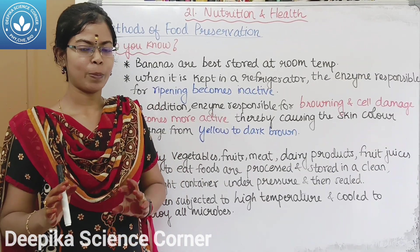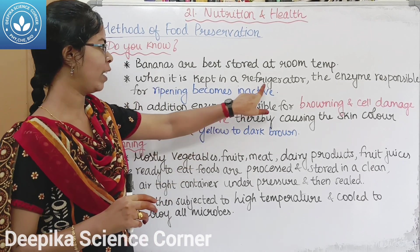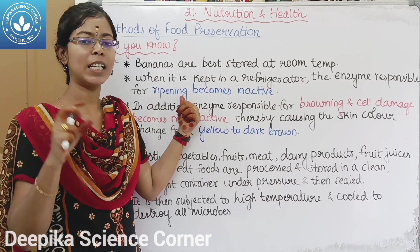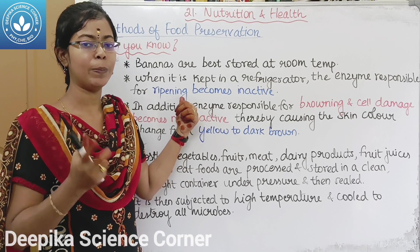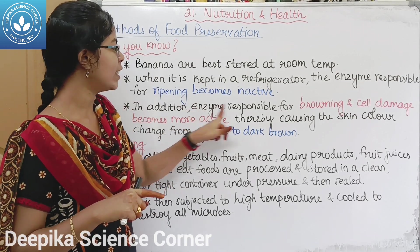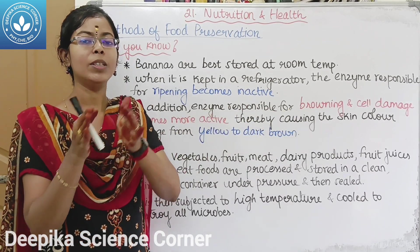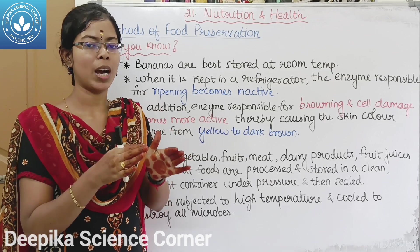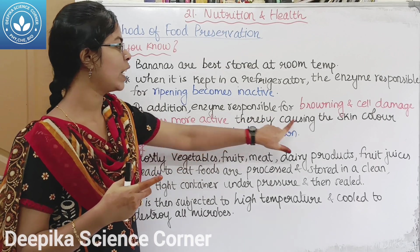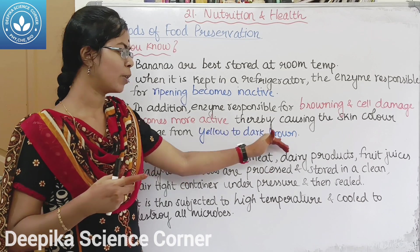Did you know bananas should be stored at room temperature? If you store bananas in the refrigerator, the enzyme responsible for ripening becomes inactive. The enzyme responsible for browning and cell damage becomes very active in cold, causing the skin color to change from yellow to dark brown.